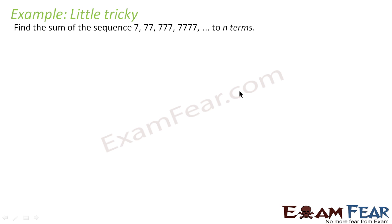This is a little tricky example. Here we have to find the sum of 7, 77, 777, 7777, up to n terms. If you observe this, there is a pattern: this is 1 times 7, this is 2 times 7, this is 3 times 7, this is 4 times 7, and it keeps going.